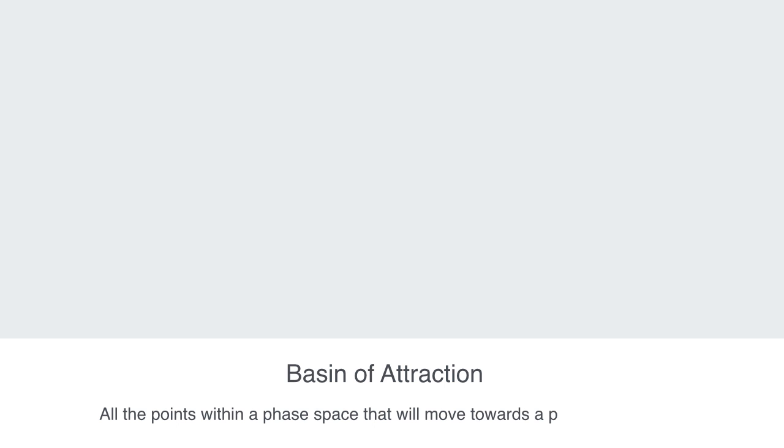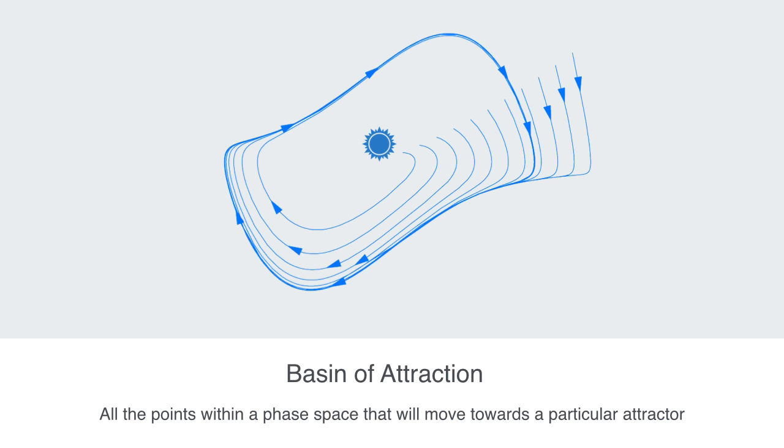A so-called basin of attraction describes all the points within our state space that will move a system towards a particular attractor. So we can think of a planet's gravitational field as a basin of attraction. If we place some matter that is large enough into the gravitational field, it will be drawn into the planet's orbit irrespective of its starting condition.